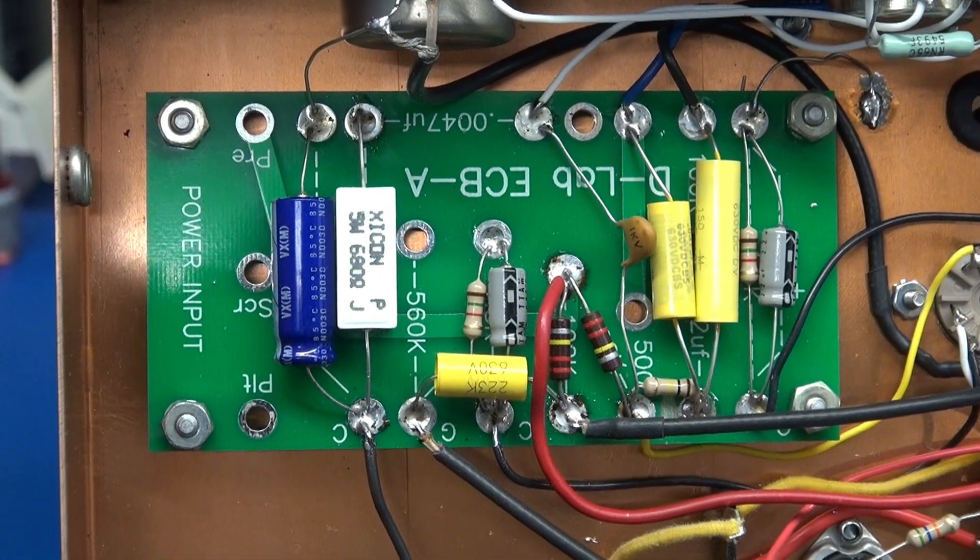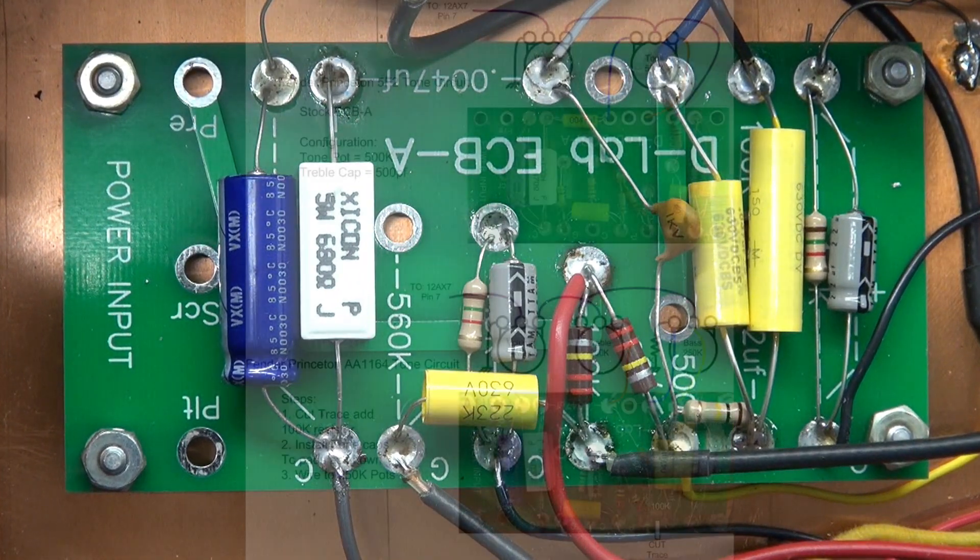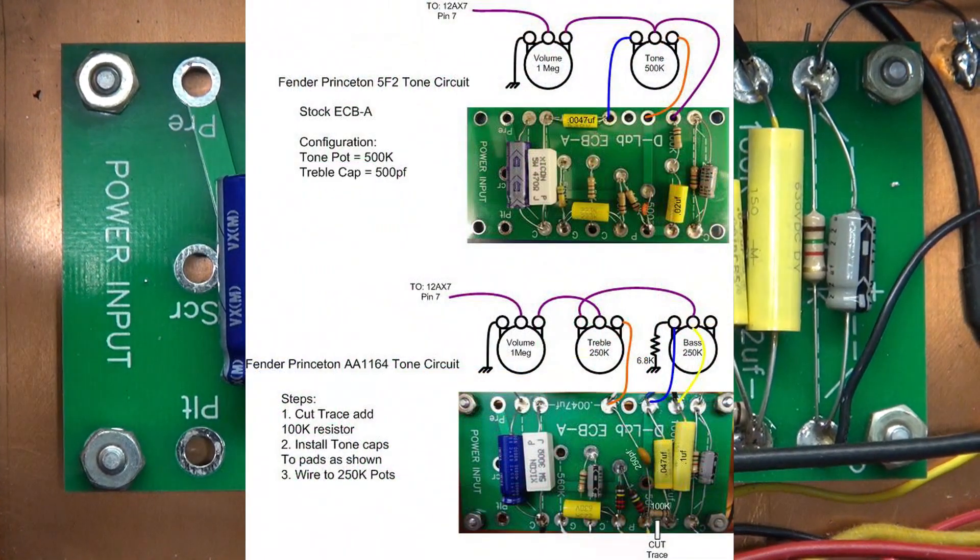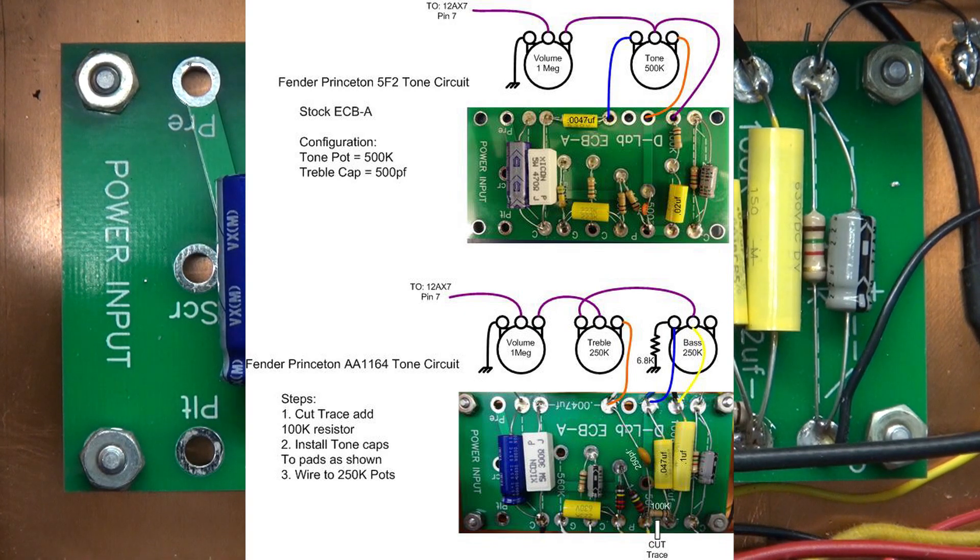Here's the instructions for modifying the ECBA board to support separate bass and treble controls. You can see the process is fairly simple. Cut a trace, rearrange components on the board.